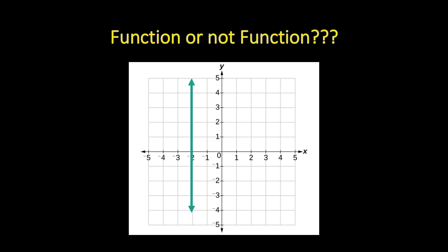The next example has a vertical line passing through negative two, giving the equation x equals negative two. Because the graph itself is a vertical line, when you apply the vertical line test and draw your vertical line, it becomes identical to the graph of the equation. That means there will be infinitely many points intersected by that vertical line and the graph, so this is not a function.